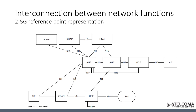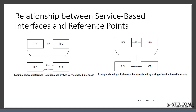This kind of representation is used when interactions exist between any two network functions. The reference point names will be listed in the next slides for reference, so you can become familiar with them, and we will later see what messages are transferred over the different interfaces or reference points. But first, we need to check the relation between service-based interfaces and reference points.